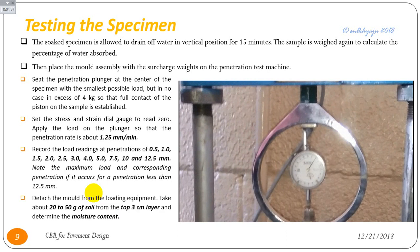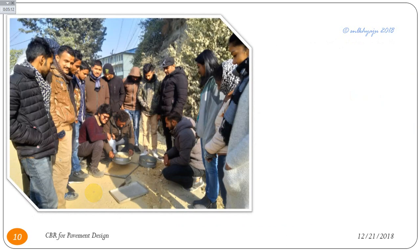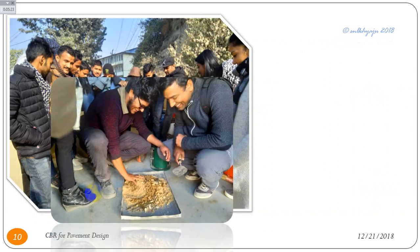After load measurement for each respective deflection, detach the mold from the loading equipment. Take about 20 to 50 grams of soil from the top 3 cm layer and determine the moisture content. This figure shows the collected sample of subgrade soil passing through 20 mm and retained on 4 mm, and the mixing of optimum moisture content into the sample.